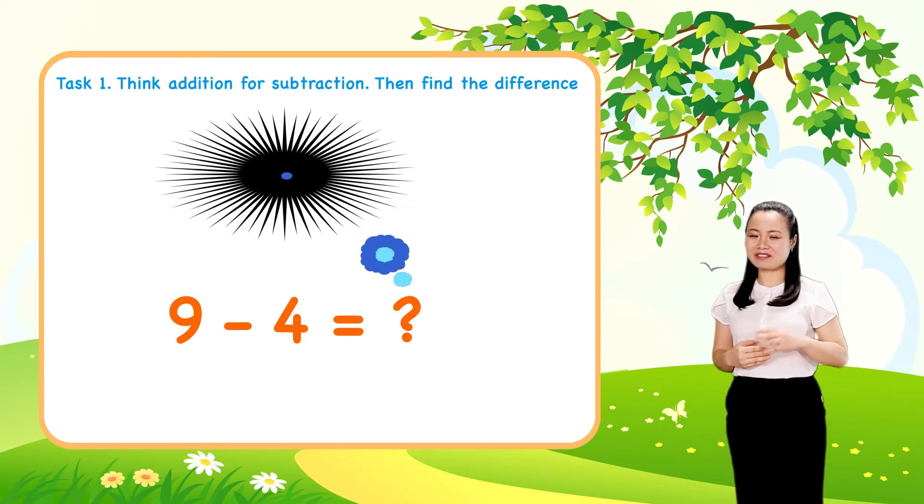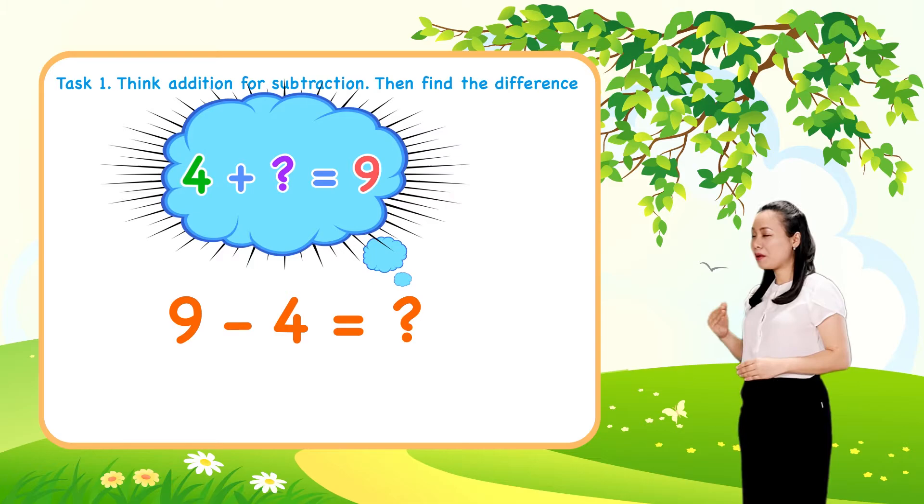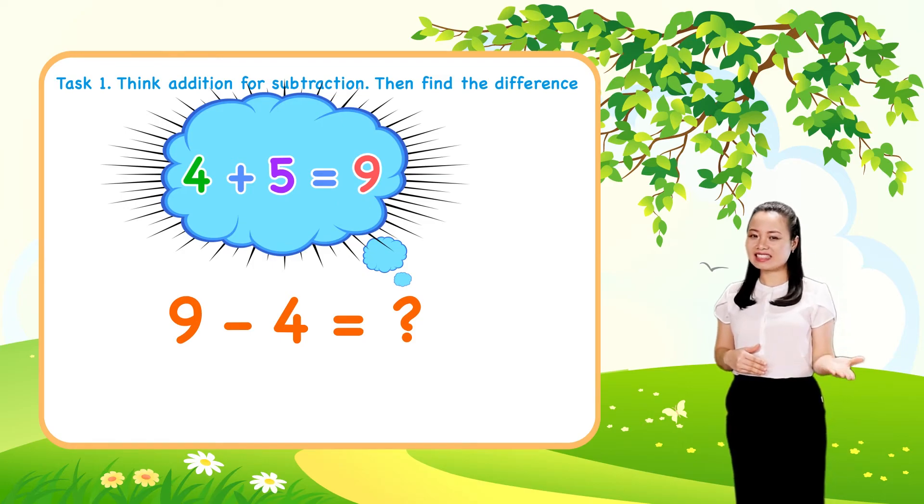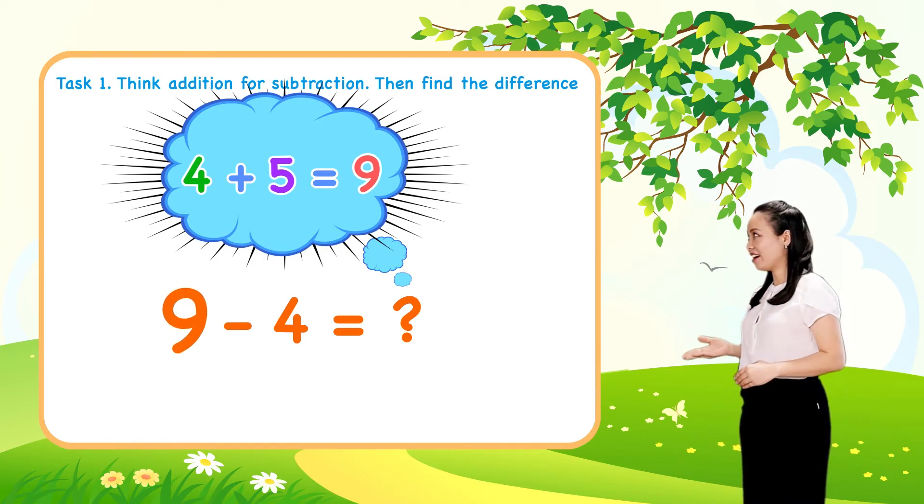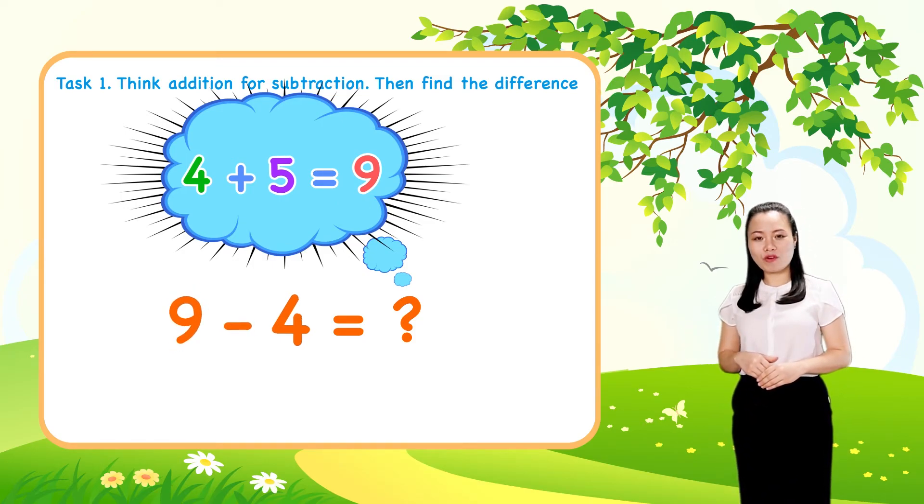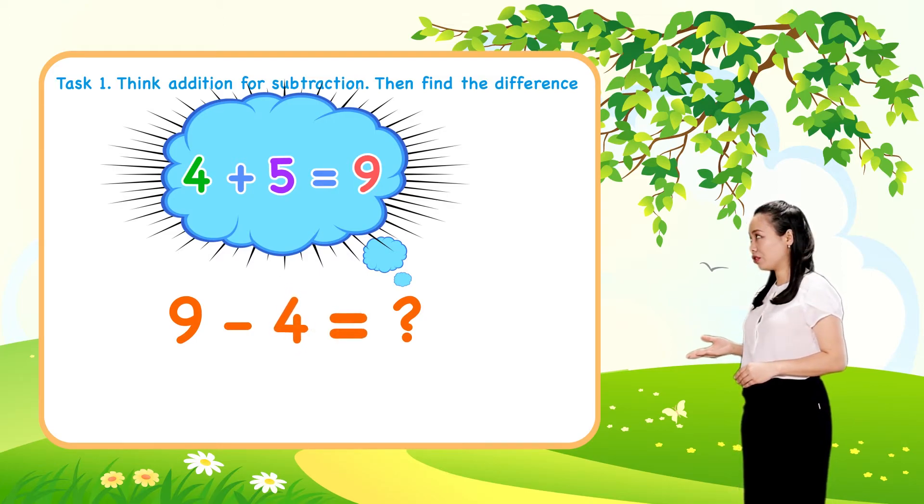Next, think 4 plus 5 equals 9. So 9 minus 4 equals 5.